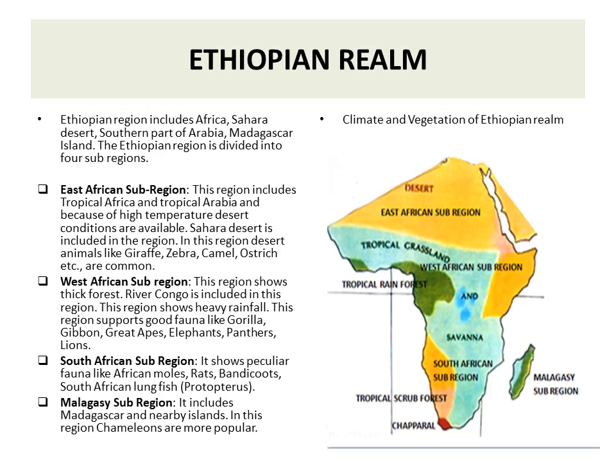The West African sub-region shows thick forest. River Congo is included in this region, which receives heavy rainfall. Here gorilla, gibbon, great apes, elephants, panthers, and lions are present. In the South African sub-region, particular fauna such as African moles, rats, bandicoots, and lungfishes are found. In the Malagasy sub-region, which includes Madagascar and nearby islands, chameleons are most popular.